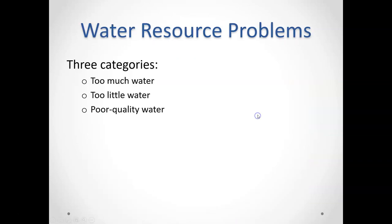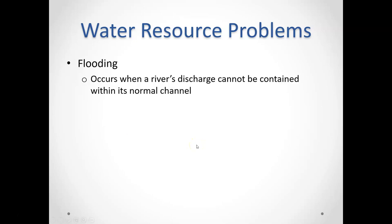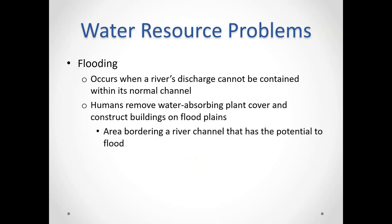Now let's talk about resource problems. When it comes to having and getting water, humans face three categories of problems: too much water, too little water, and poor quality water. Too much water happens when flooding occurs — when a river or body of water receives so much runoff, usually from large rainstorm events, major hurricanes, or other intense precipitation, that it overwhelms the systems designed to hold water and spills over into surrounding areas.